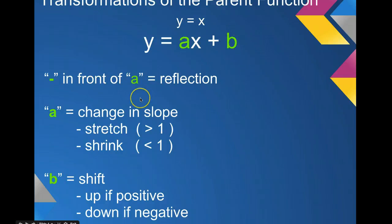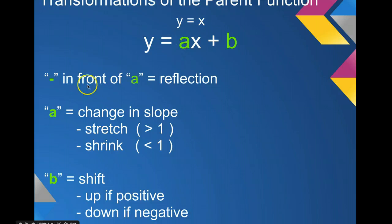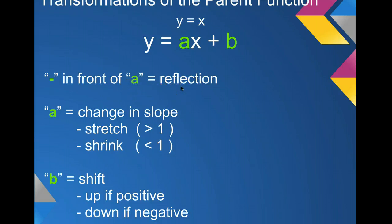There's a third transformation in a linear function that you can't see here because right now we have a positive. But you could have a negative in front of the slope. If you did have a negative in front of the a, that transformation is called a reflection. When we graph the equation, the equation actually reflects over the y-axis.